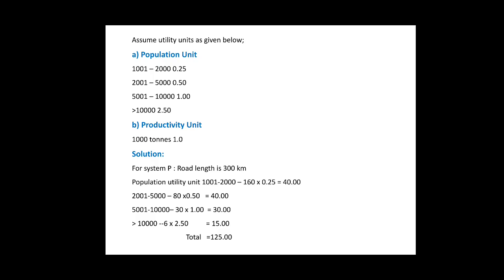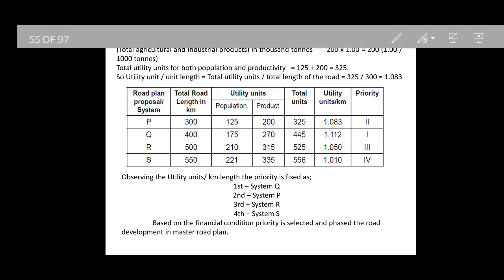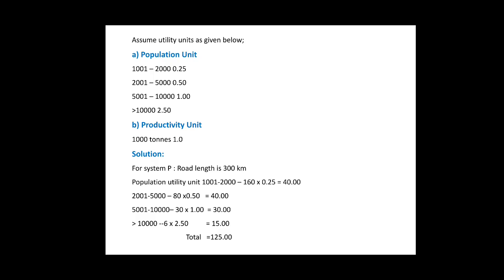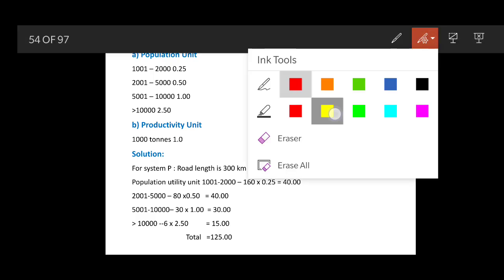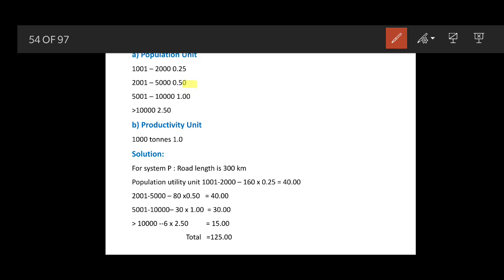We will assume the utility units as follows. For the population range of 1001 to 2000, a utility unit of 0.25 can be assigned. For the population range of 2001 to 5000, a utility unit of 0.5 can be assigned. For 5001 to 10000, a utility unit of 1 can be assigned, and for population greater than 10001 the utility unit will be 2.5.